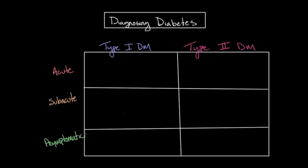The acute presentation is the most severe presenting situation and can be life-threatening for both type 1 and type 2 diabetes. This individual becomes very sick over a relatively short period of time, usually only a couple of days. Symptoms will include things like nausea, vomiting, and abdominal pain, and this often results in severe dehydration. The individual may even become confused or unconscious as a result.